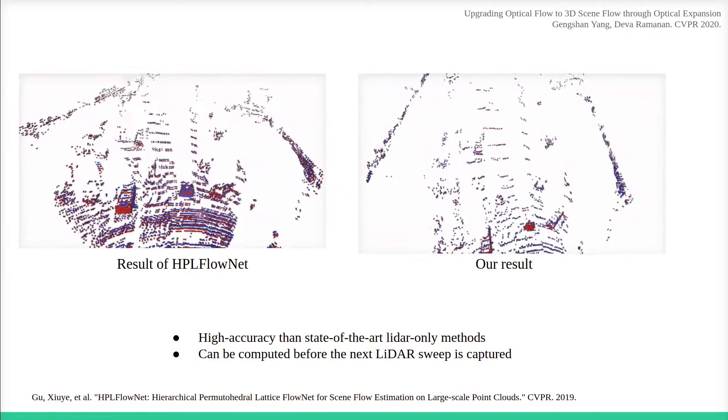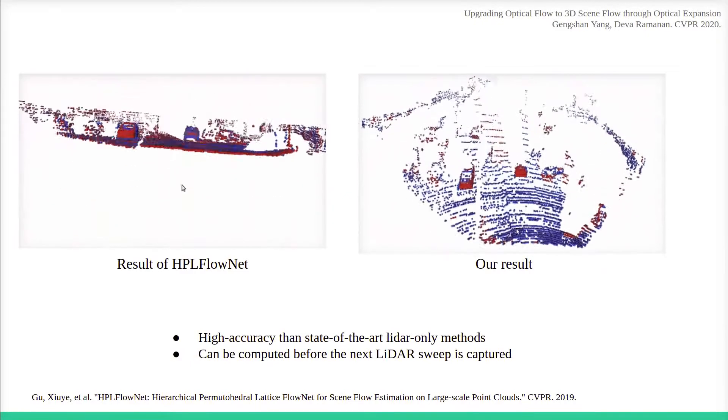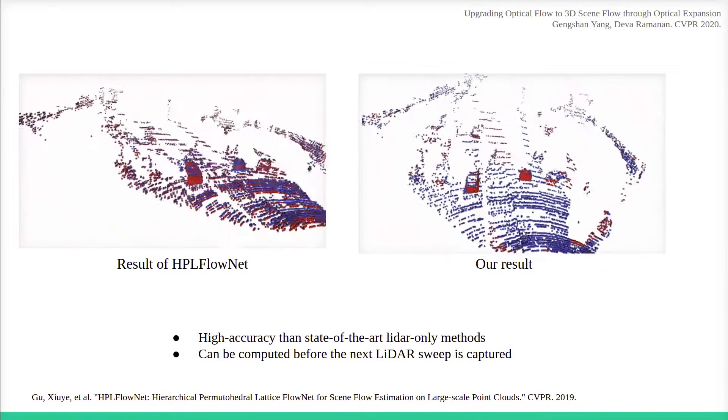Also, because global shutter cameras can be triggered much faster than a rotating LiDAR sensor, our method predicts 3D scene motion before the next LiDAR sweep can be captured.